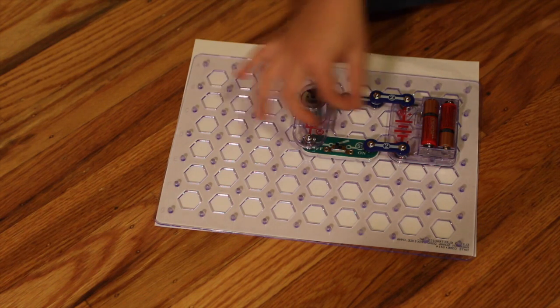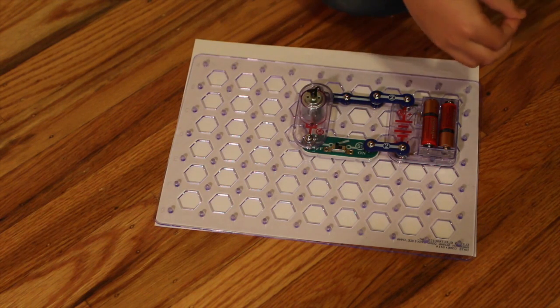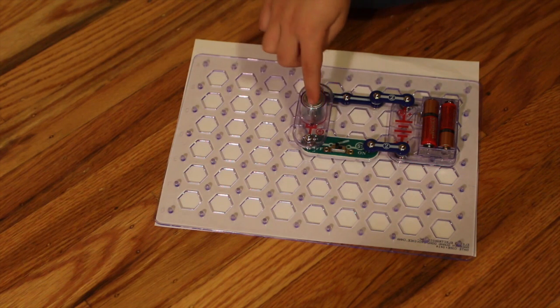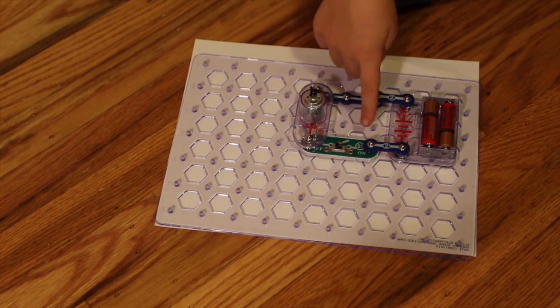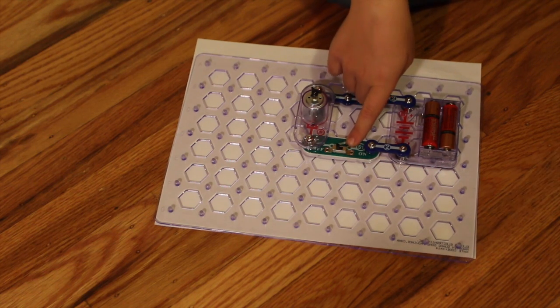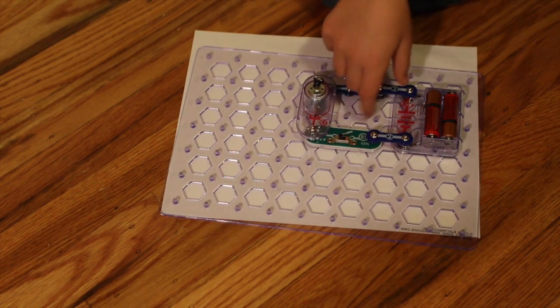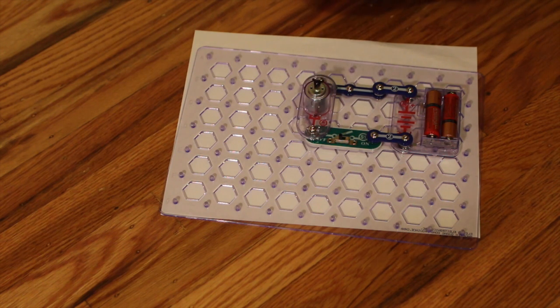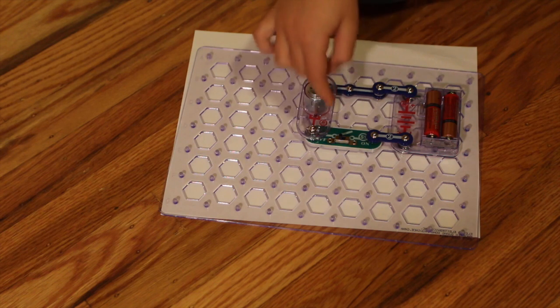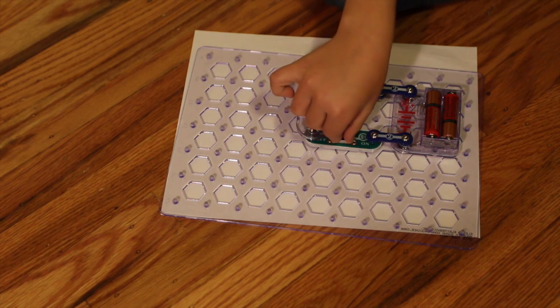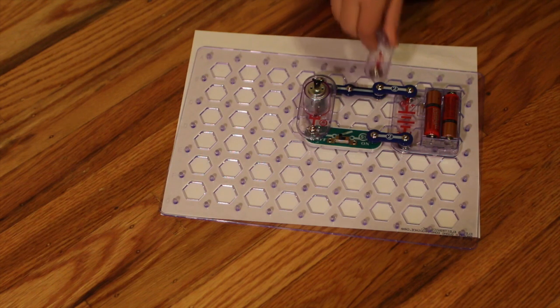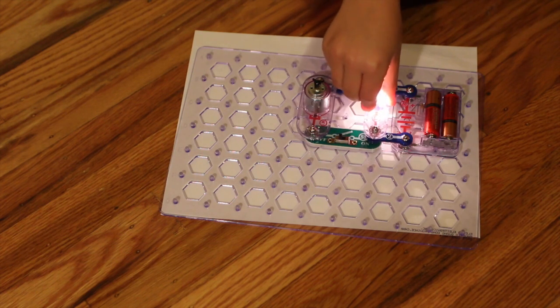Remember how the switch activates the thing to work? Well see this is on the left side of the switch. That means the switch activates it. So if we turn it on it'll work. But on this side the switch isn't blocking it yet. So it could work. Let's try it. See it works already.